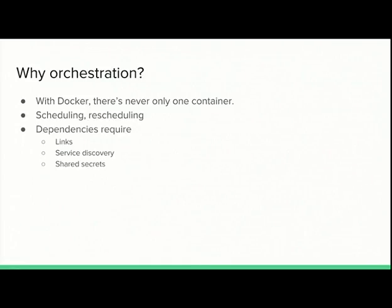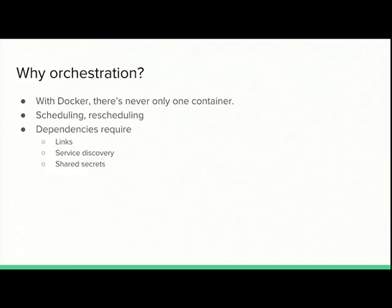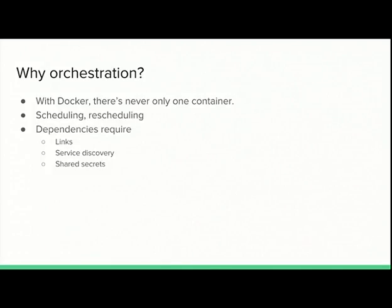In a production infrastructure, you'll have containers popping up everywhere, containers going down, having to be replaced. For that you need some kind of tool that can keep an eye on your containers and say, okay, one of my three web server containers just went down, so I need to spin up another container somewhere to mitigate that. That's what orchestration software does.